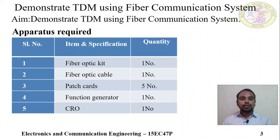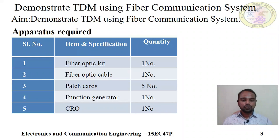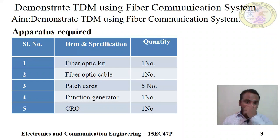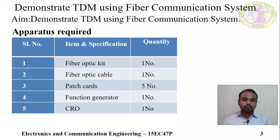In order to conduct this experiment, we need five apparatus — five equipment and instruments. First, we have the fiber optic kit, which has two facilities: TDM modulation facility and TDM demodulation facility. Then, one fiber optic cable is available.